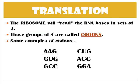When a ribosome reads RNA, it reads the bases in sets of three. Those groups of three are called codons. Some examples of codons would be AAG, GUG, or GGA — it doesn't matter what three letters, just as long as there are three RNA bases.